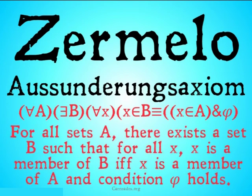Once again, for all sets A, there exists a set B such that for all X, X is a member of B if and only if X is a member of A and condition φ holds. That was complicated. Let's take a look at how this does in fact get out of Russell's paradox.